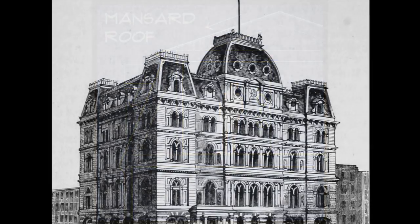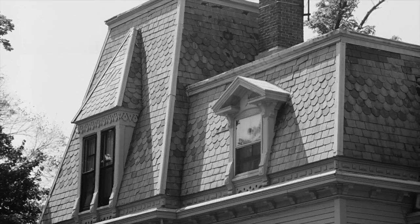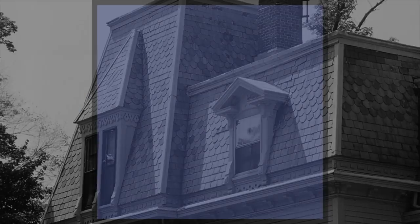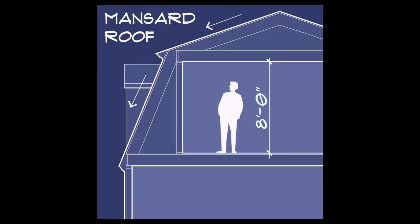The mansard roof is a configuration similar to the gambrel, but it's four-sided. Much like the gambrel, the mansard roof creates a significant amount of usable space on upper floors. The lower section is steeply pitched while the top is shallow.